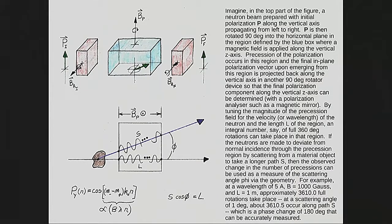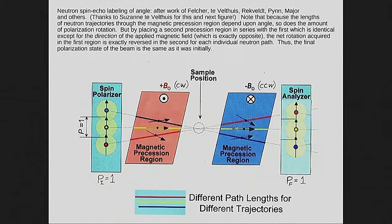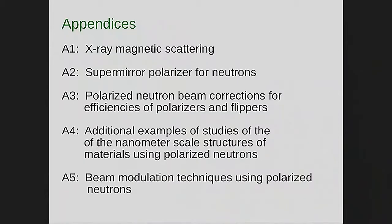There's also a neat way of using very divergent beams and still taking advantage of polarization rotation by reversing the field direction in two precession sections. But that's tomorrow's discussion. There are some appendices available, and that concludes this session.